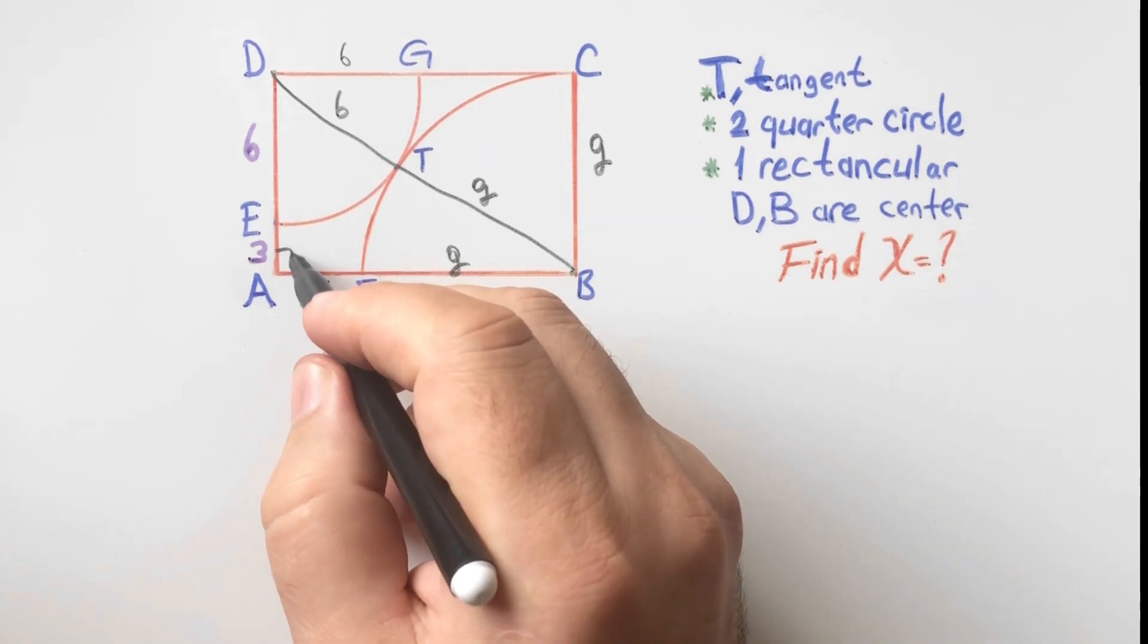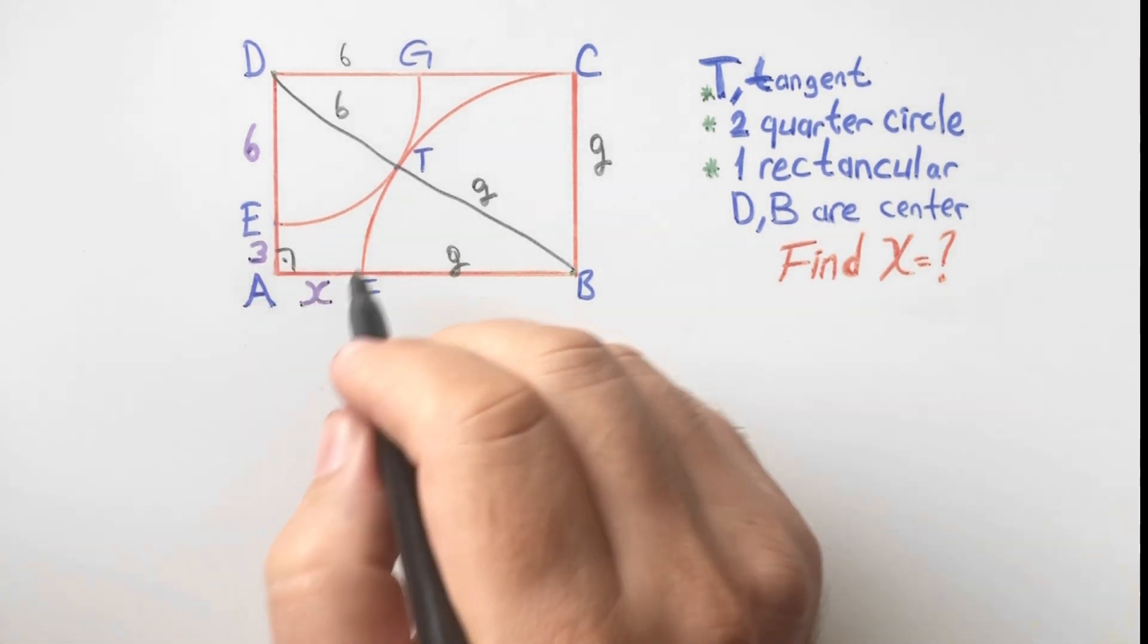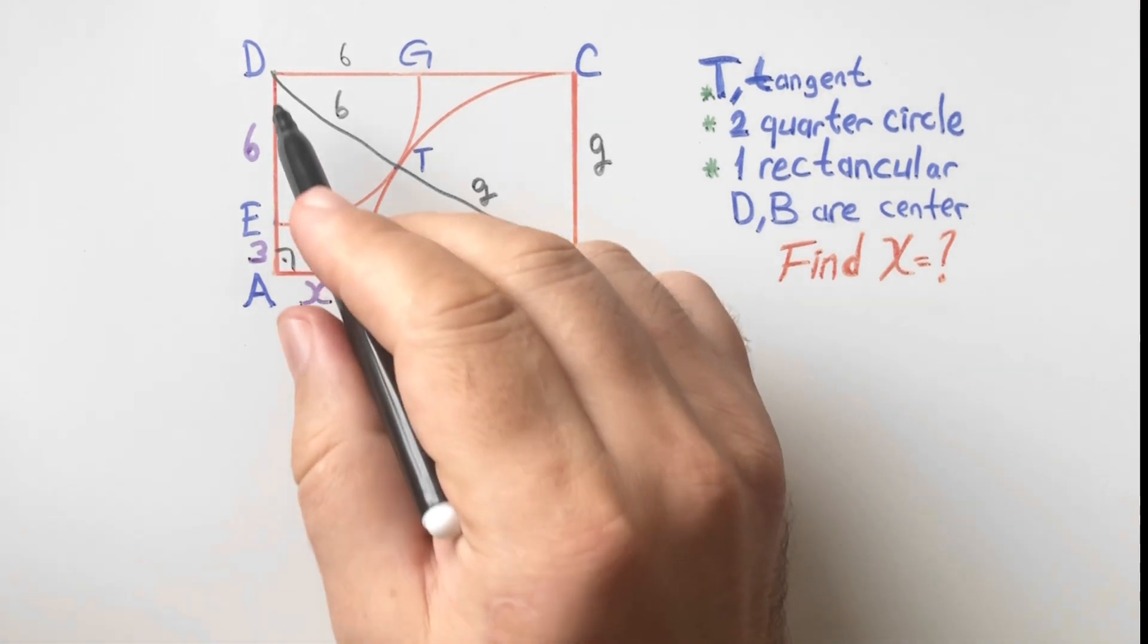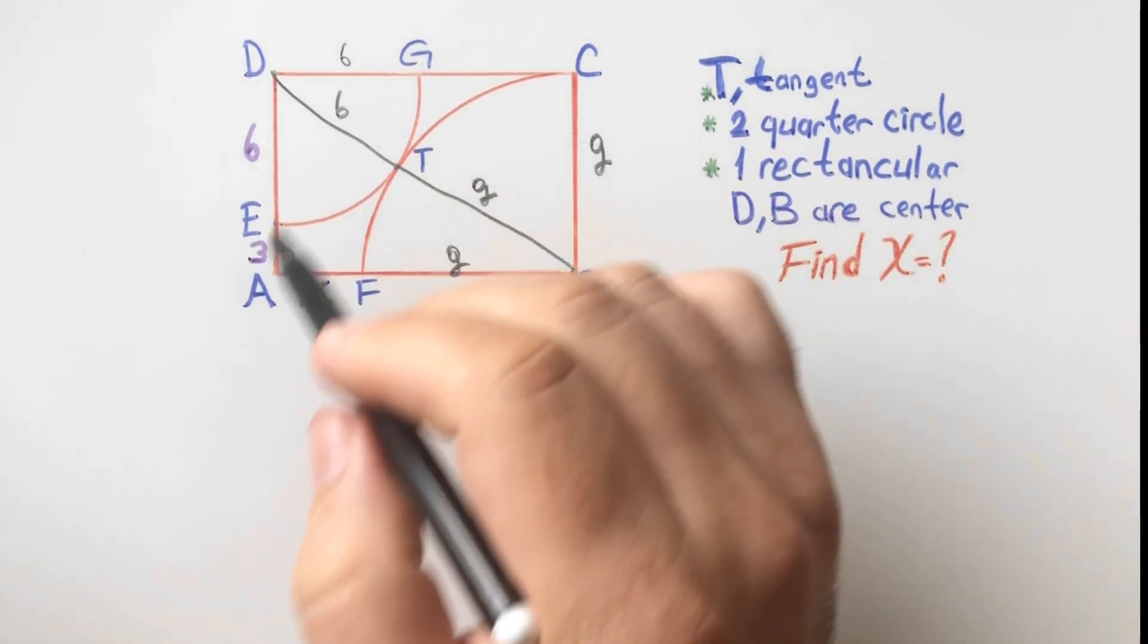This angle is 90 degrees because of the rectangle, so if we apply Pythagorean theorem to triangle ABD.